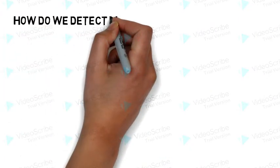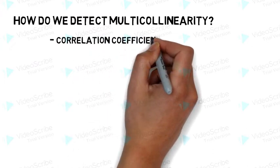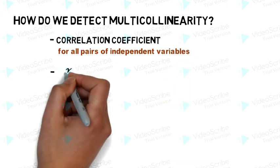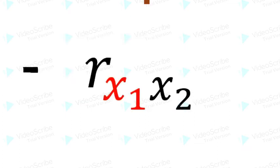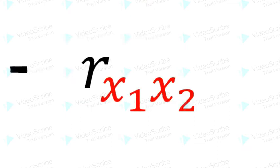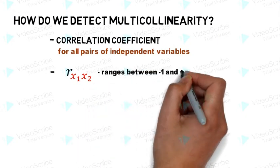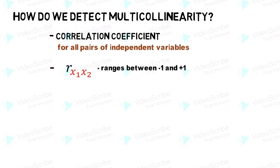So how do we detect multicollinearity in this model? We can do that by calculating the correlation coefficient for all pairs of independent variables, denoted as r. The relationship between explanatory variables x1 and x2 is denoted as r x1 x2. The correlation coefficient r ranges between minus 1 and plus 1. If it is close to minus 1 or plus 1, it means there is multicollinearity. If it is close to 0, it means there is no multicollinearity or low multicollinearity.